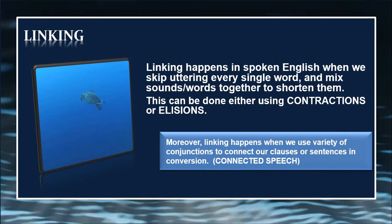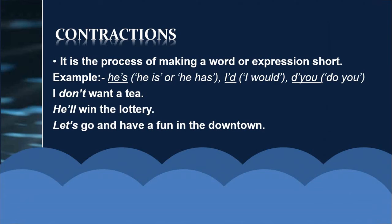Linking happens in spoken English when we skip uttering every single word and mix sounds or words together to shorten them. We can do this using contractions or elisions. Linking also happens when we use conjunctions to connect clauses or sentences — this is called connected speech. The first mechanism is contraction. Contraction is the process of making a word or expression shorter. For example: 'he is' becomes 'he's,' 'I would' becomes 'I'd,' 'you' becomes 'ya.' Sentences: 'I do not want the tea' becomes 'I don't want the tea'; 'he will win the lottery' becomes 'he'll win the lottery'; 'let us go and have fun downtown' becomes 'let's go and have fun downtown.'